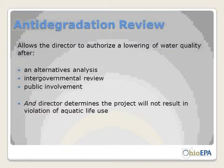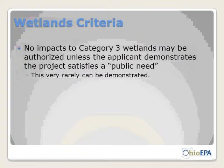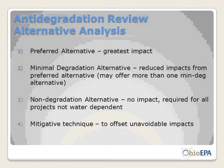Our antidegradation review allows the director to authorize a lowering of water quality, but he must consider: an alternatives analysis, an intergovernmental review, and public involvement. The director then determines whether the project will not result in a violation of aquatic life use — if so, he can approve the permit. No impacts to Category 3 wetlands can be authorized unless an applicant demonstrates public need, which is very rarely demonstrable.